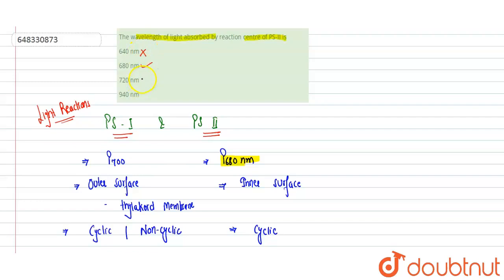720 nanometers is incorrect, and 940 nanometers is also incorrect. So option B, 680 nanometers, is correct. Hope you got it — thank you.